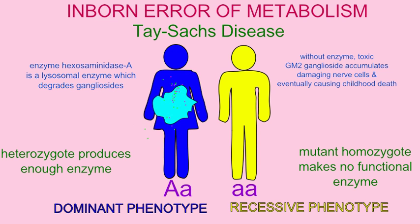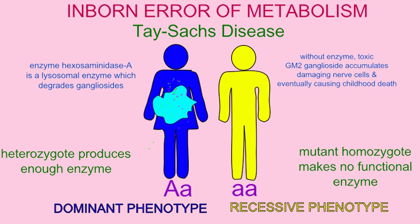If an individual makes no enzyme, as is the case in individuals homozygous recessive for mutant alleles, then toxic byproducts accumulate causing the death of nerve cells and eventually the death of affected individuals in childhood.